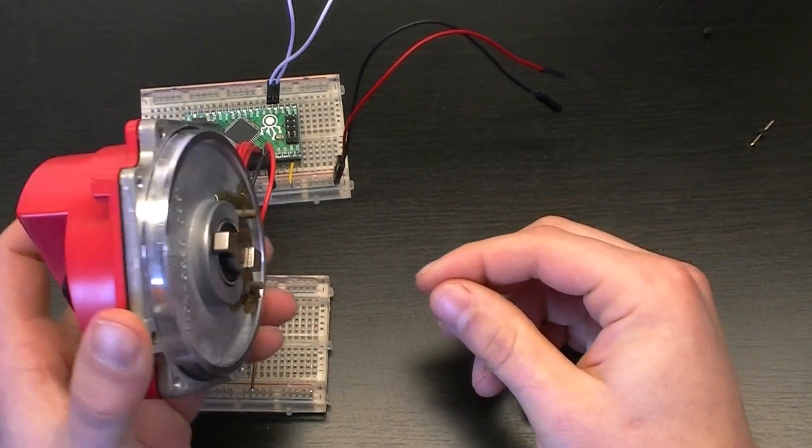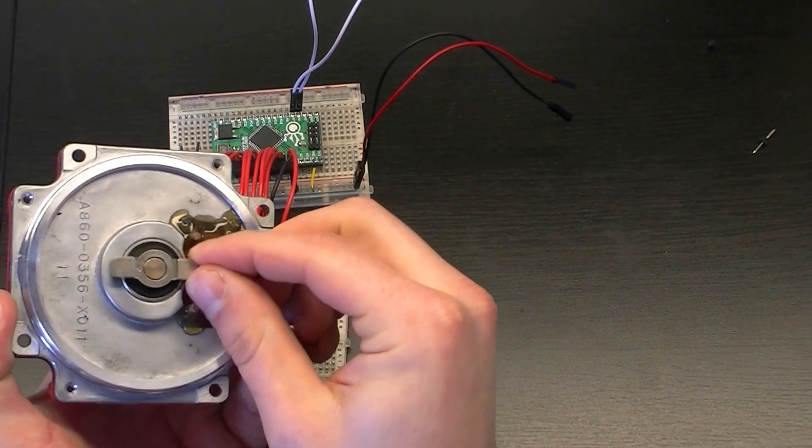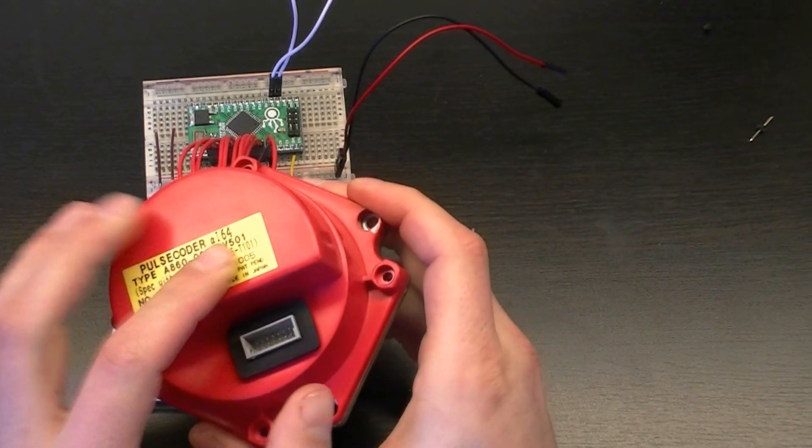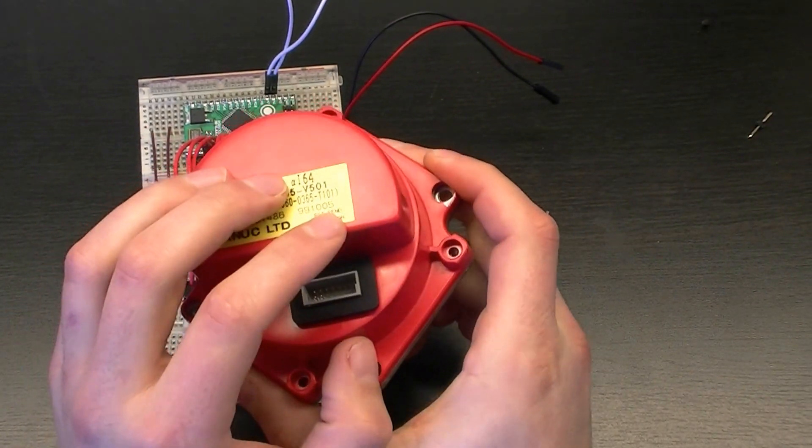Now this would bolt onto the back of the motor and then this here would plug into the shaft of the motor. Now that gives the angular position through here and into the unit and whatever's happening inside of here.